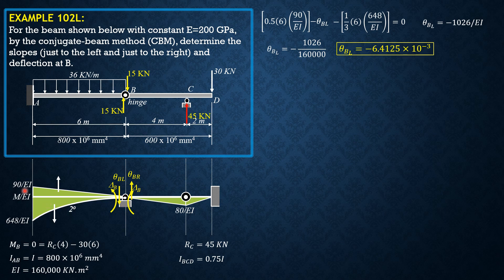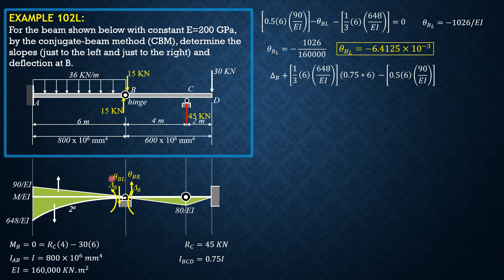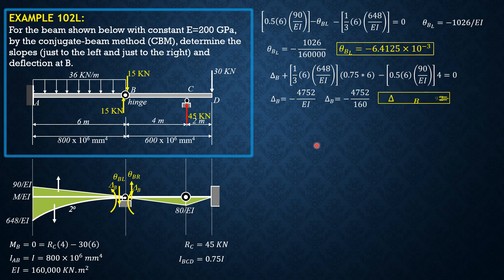Likewise, taking summation of moments at B just to the left (counterclockwise positive) for segment AB: delta_B plus (1/3)×6×(648/EI) times (3/4)×6, minus 0.5×6×(90/EI) times (2/3)×6 (which is 4 meters), equals 0. Solving gives delta_B equal to negative 4752 over EI. Dividing by 160 converts to millimeters: delta_B equals negative 29.7 mm.